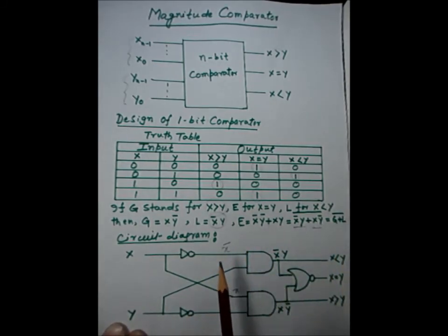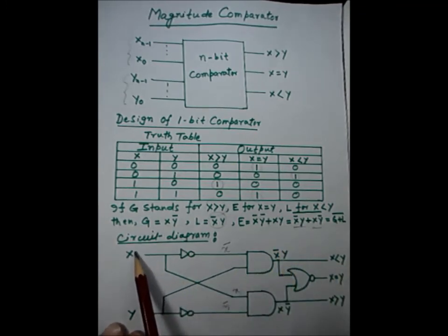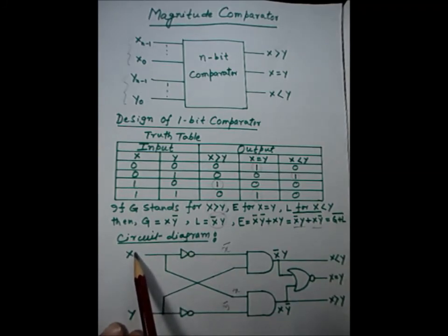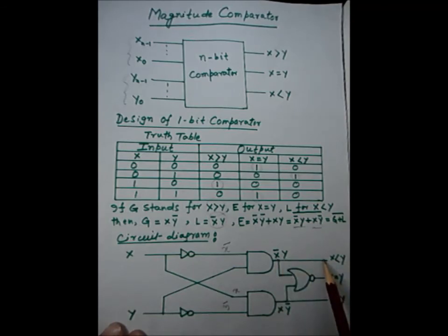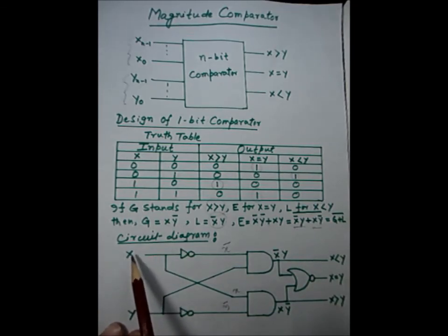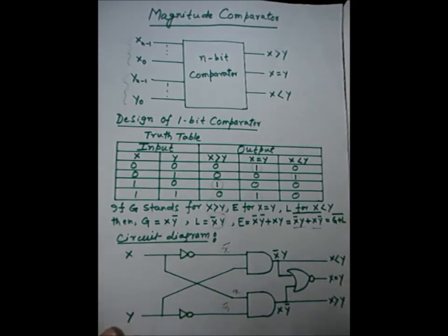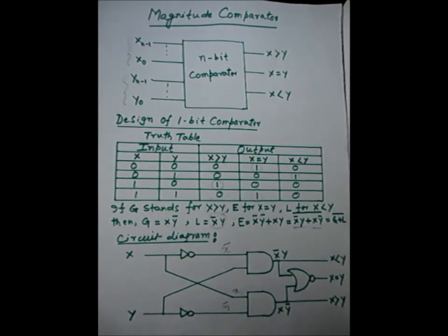This is the circuit for one-bit comparison. When inputs X and Y are given, if X is less than Y, the less-than output becomes high. If both are equal, the equal output becomes high. If X is greater than Y, the greater-than output becomes high. That is the design of a one-bit magnitude comparator.